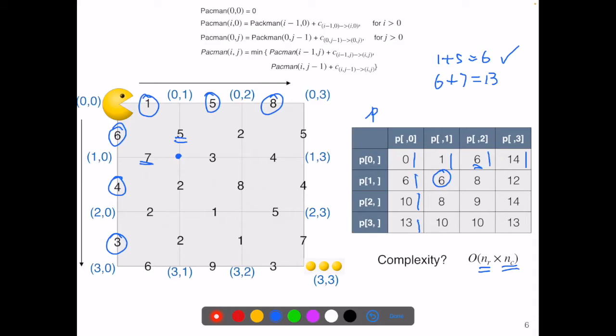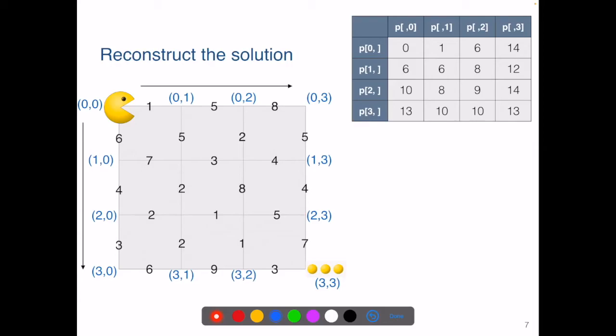So this algorithm tells us the shortest path or the lowest cost getting to the destination. What if we want to know the detail of the solution and we want to know the exact optimal path? Now let's see if we can reconstruct an optimal solution.